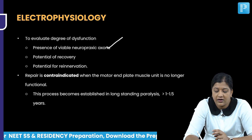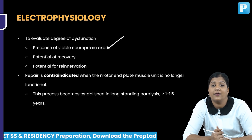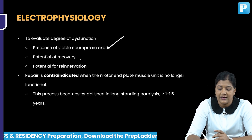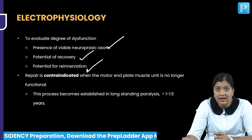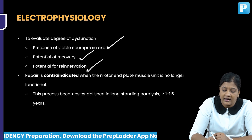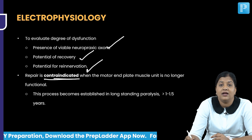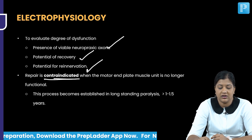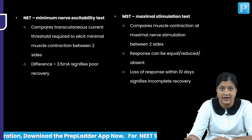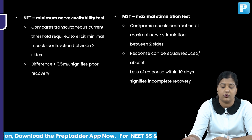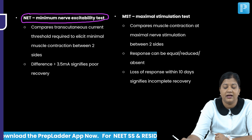Electrophysiological tests help us understand the amount of viable neuropraxic axons, the potential for recovery, potential for re-innervation, and whether repair is indicated or contraindicated. For this we have the nerve excitability test and the maximal stimulation test.